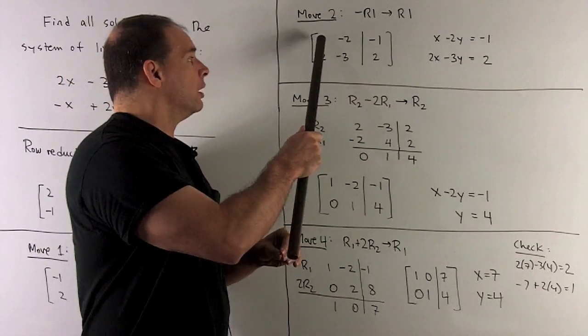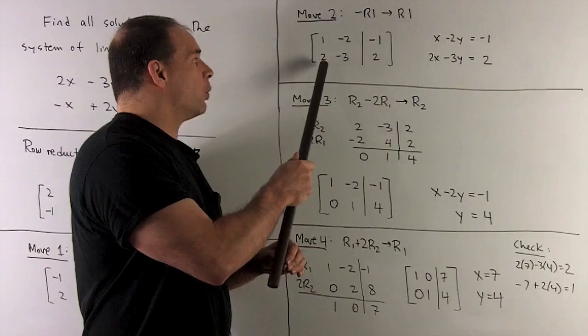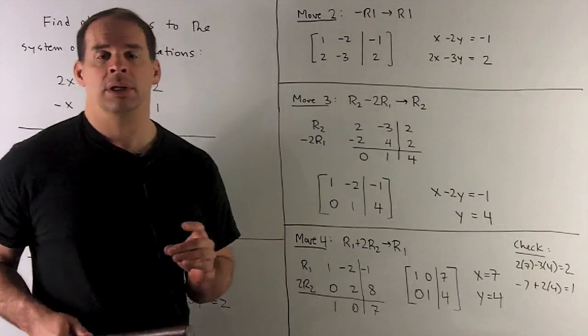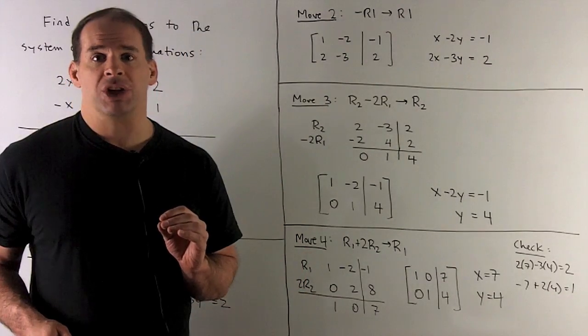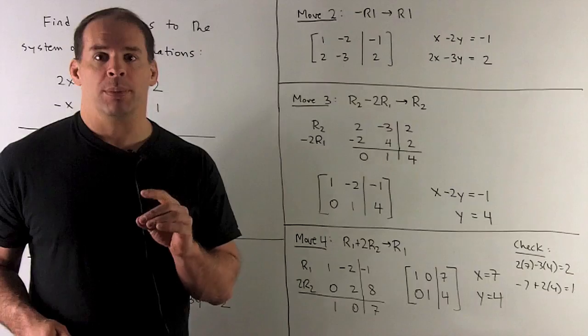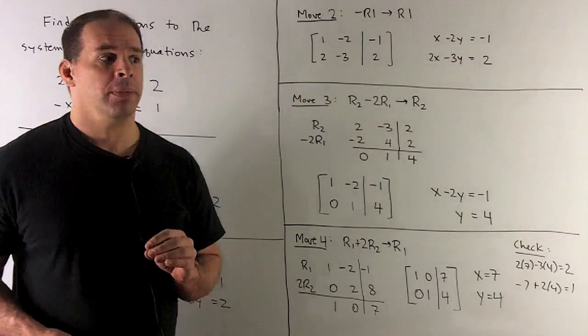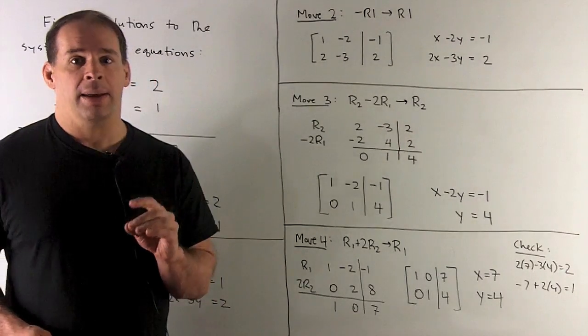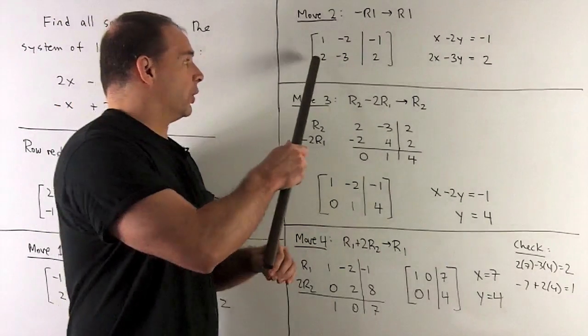Now, we have our 1. So our next step is to put a 0 where we have this 2. That's going to be our third row operation. That is, we can add multiples of a row to another row. So in this case, I want to add minus 2 times row 1 to row 2.